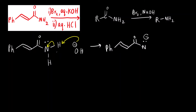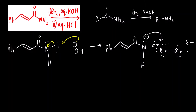Nitrogen already had one lone pair and now has another. This negative charge will react with bromine — bromination at the nitrogen occurs. An N–Br bond is formed, with nitrogen attacking bromine (δ⁺ and δ⁻ ends). What we get is Ph-C(=O)-NH-Br, and nitrogen still has one lone pair.